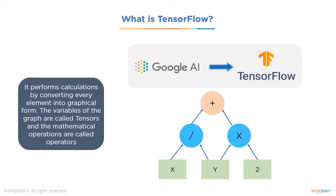What exactly are tensors? Tensors are multidimensional arrays with a uniform type. All tensors are immutable like Python numbers and strings, which means you cannot update the contents of a tensor — you can only create a new tensor.